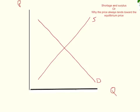Let's say that the equilibrium price for your shoes is $50. Now imagine your store manager is not entirely in touch with the market, and by mistake prices these shoes at $40. Let's think about what happens at a price of $40, which is below the market price.